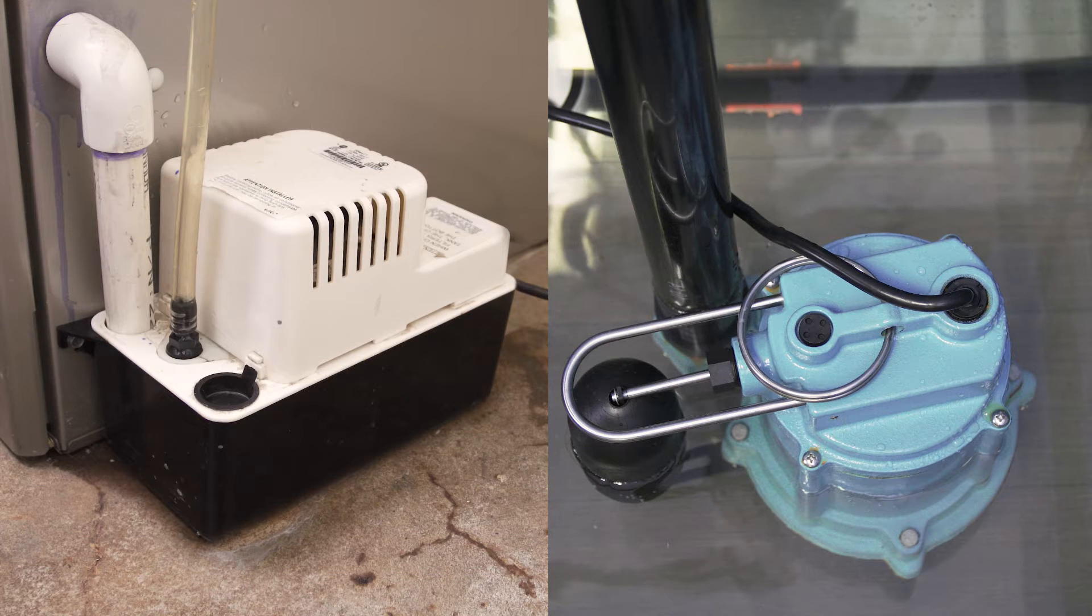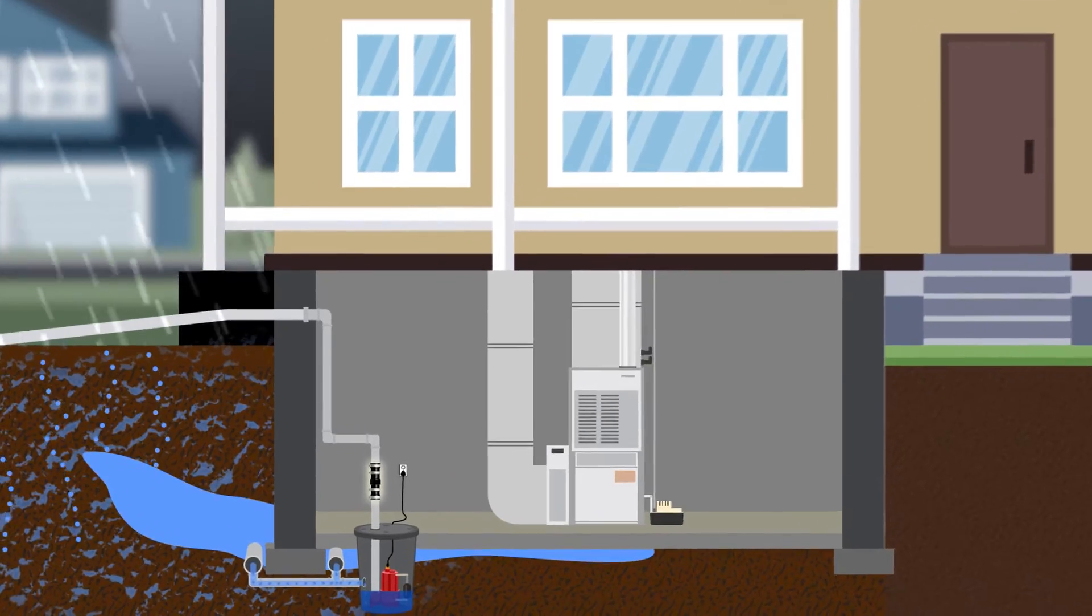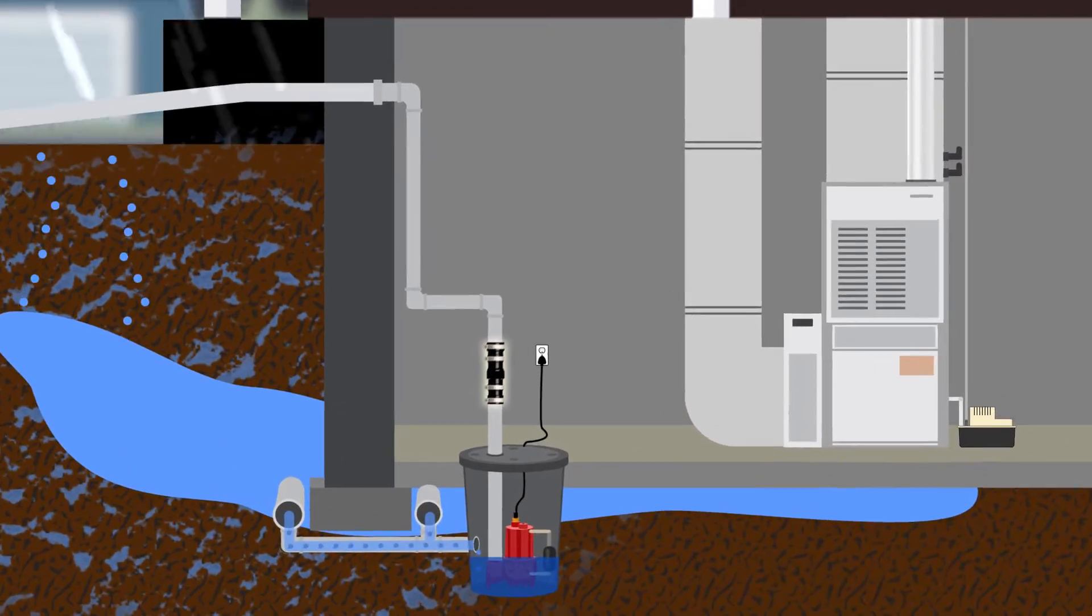Condensate pumps and sump pumps both use check valves for backflow protection. Check valves are one-way gates that prevent water from flowing back down the pipe after it's been pumped.